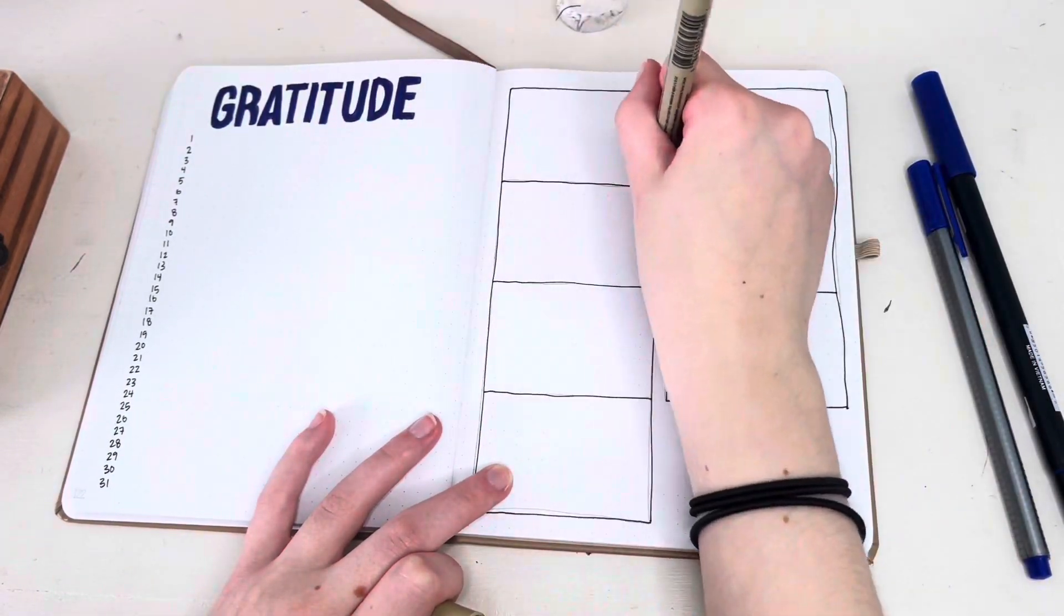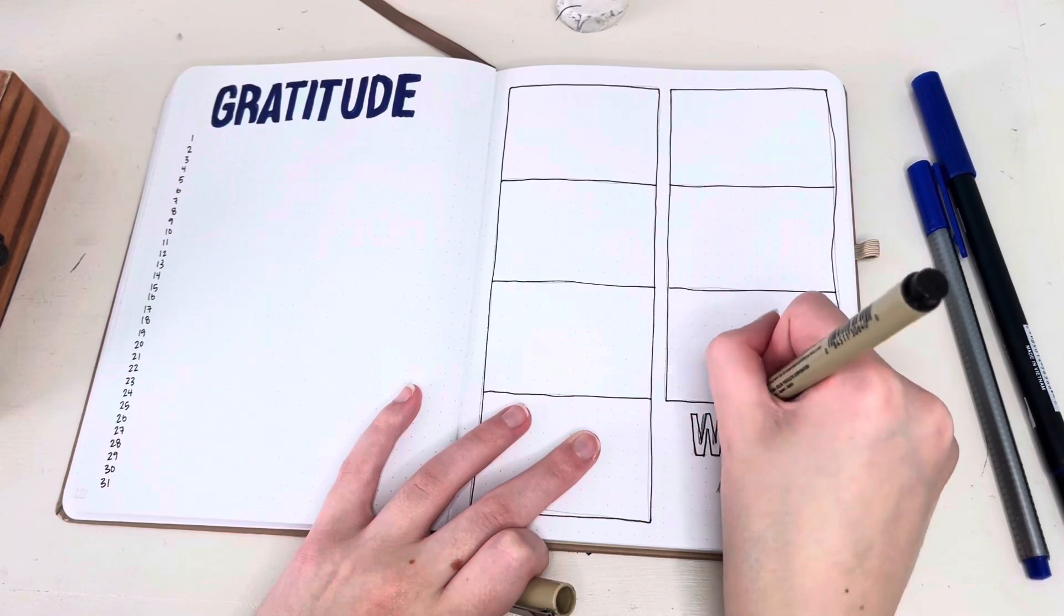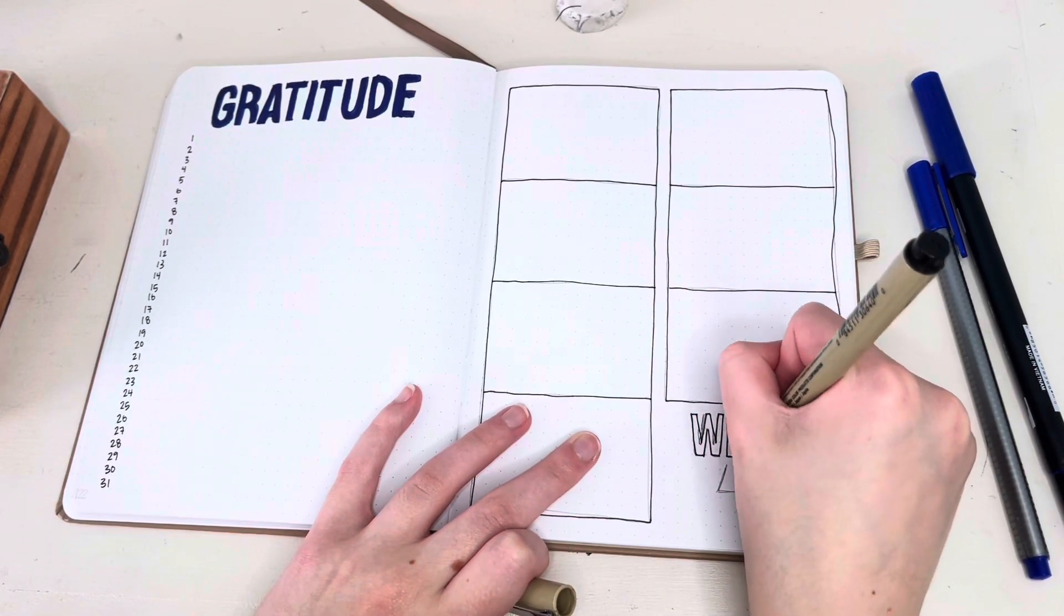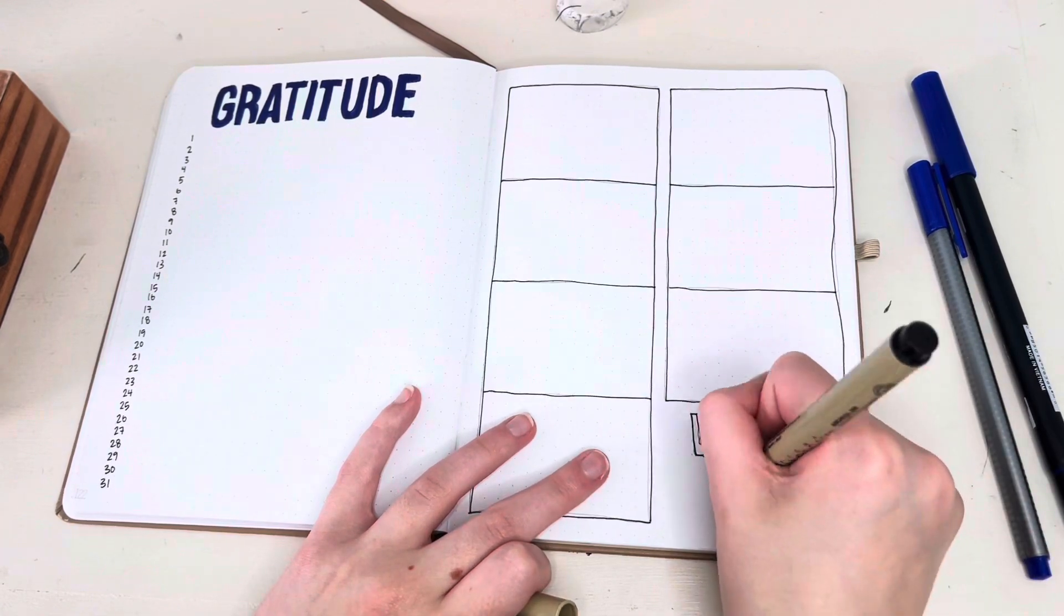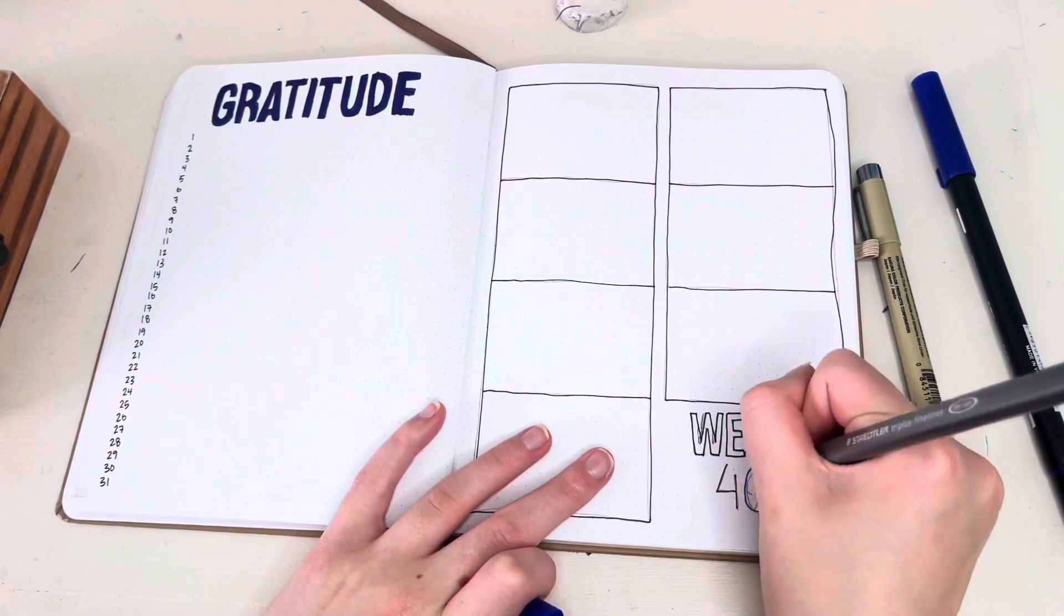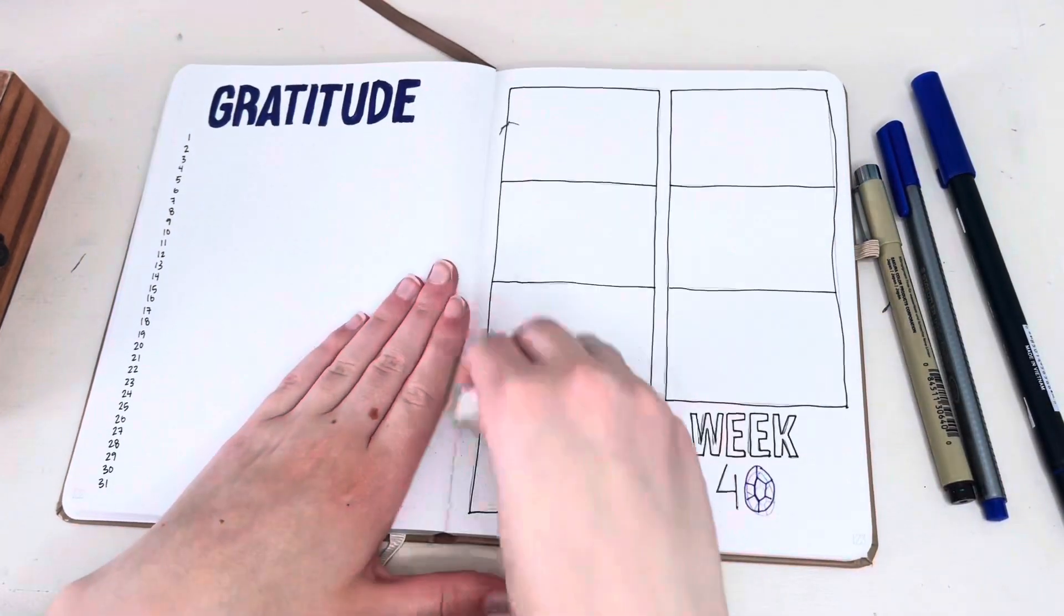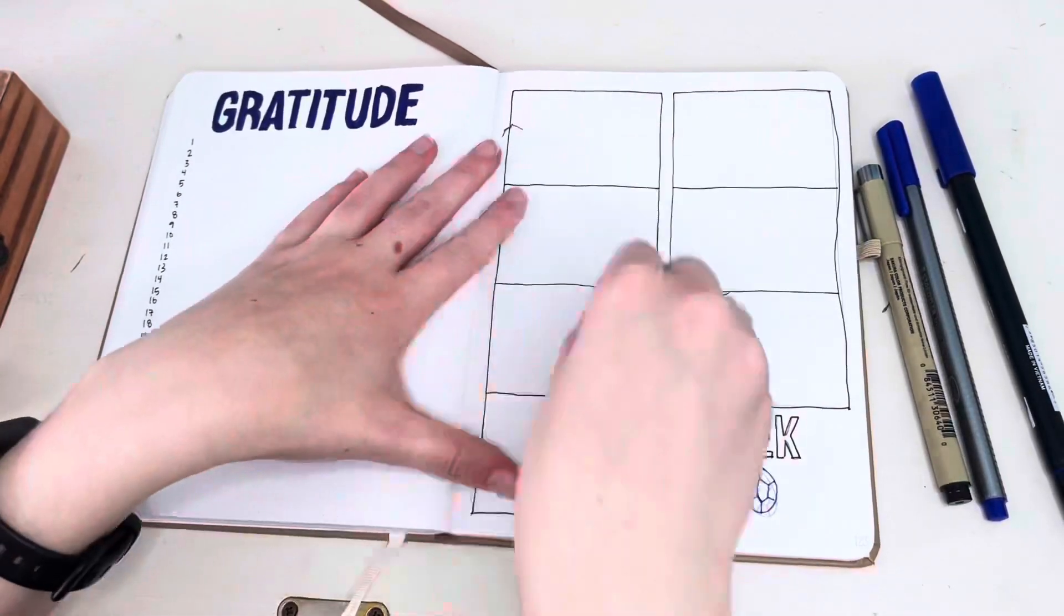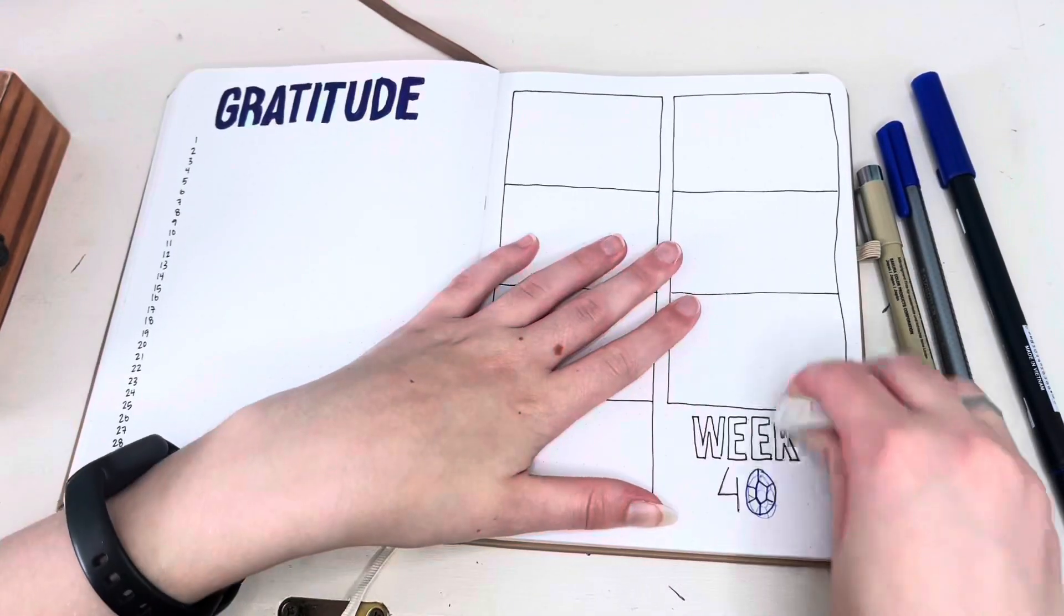As you can see, I've done my gratitude page, which is always very simple because it just gets filled in throughout the month, and my weekly spreads, which are always the same because I really like this one-page format. It doesn't take up too much space in my journal, but I still have enough room to write down all my tasks.